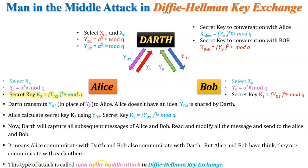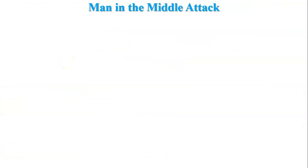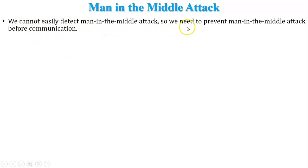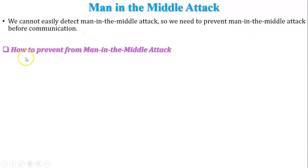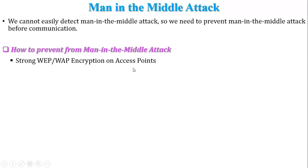This type of attack is called the man-in-the-middle attack in Diffie-Hellman key exchange. We cannot easily detect a man-in-the-middle attack, so we need to prevent it before communication begins. To prevent this attack, first, use strong WEP or WPA encryption on access points, wireless routers, or hotspots, and check whether any unknown users are connected to your hotspot or Wi-Fi.